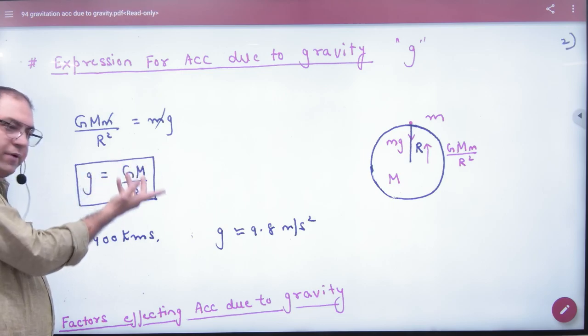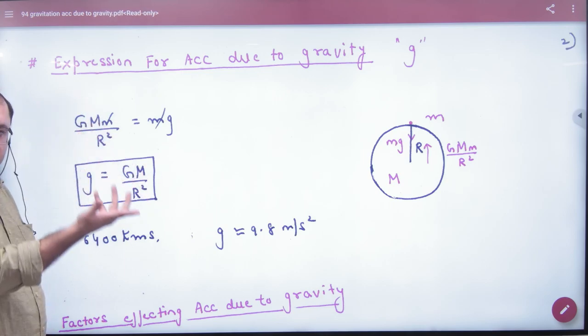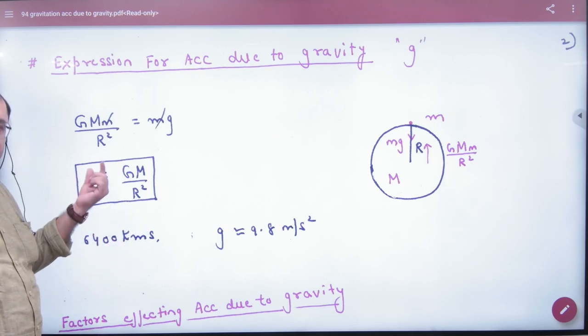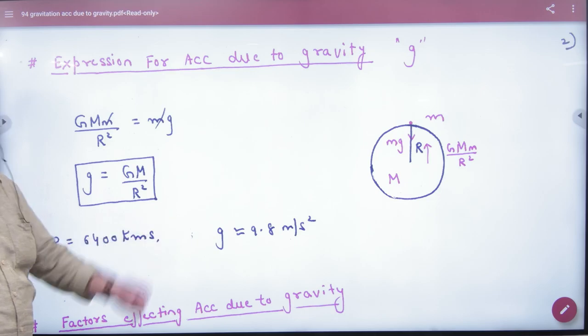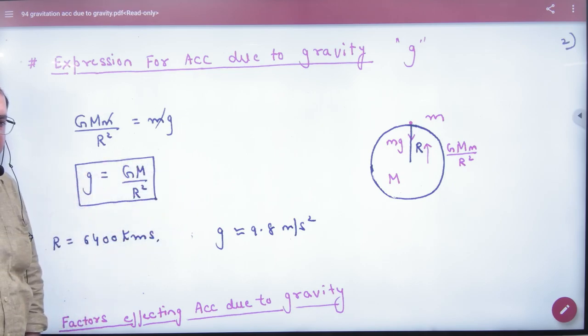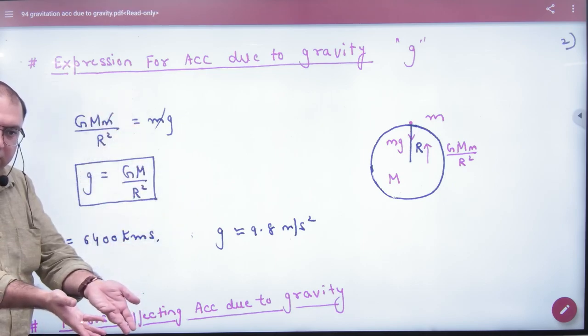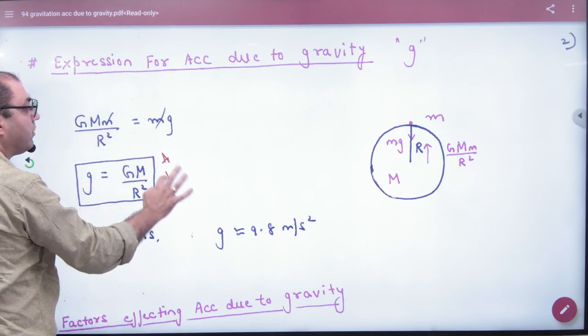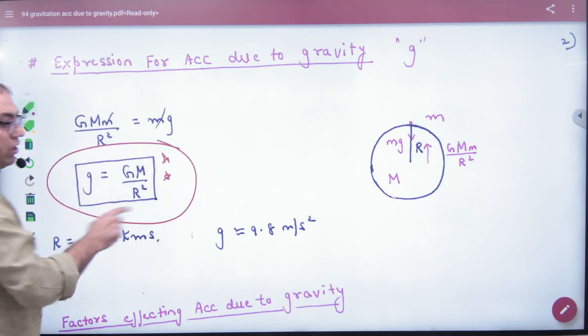So g value is known, mass of Earth is known approximately, radius of Earth is approximately 6400 km. When we put all values, what's the value of g? 9.8 m per second squared. This is not important. If you have derived 9.8 m per second squared, there are a lot of ways. Don't do this.